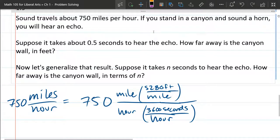We have a sound travel problem. Sound travels at 750 miles per hour. If we stand at a canyon and sound a horn, you'll hear an echo and it takes 0.5 seconds to hear the echo. So it says, how far away is the canyon wall in feet?